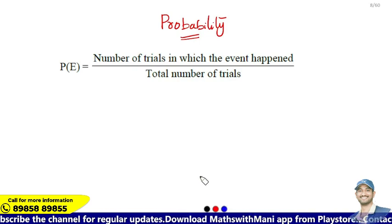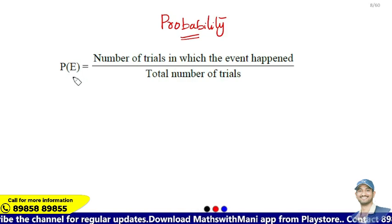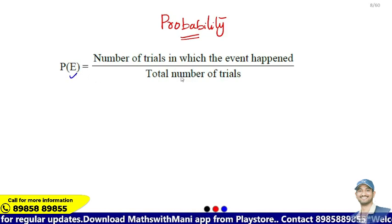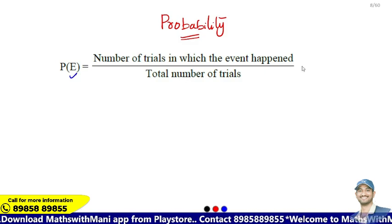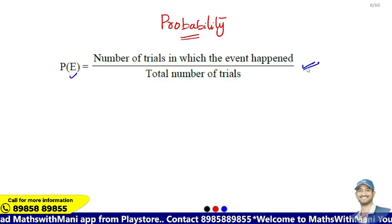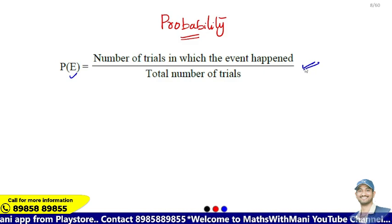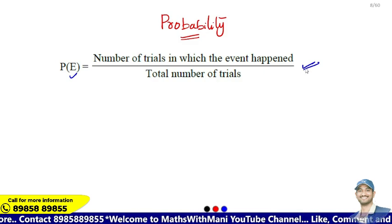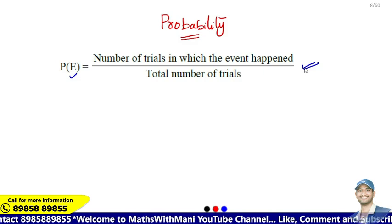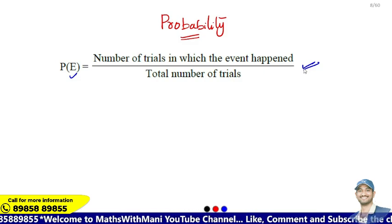The probability of an event E is equal to the number of trials in which the event happened divided by the total number of trials. This is the formula to find out the probability — how likely an event is going to happen.